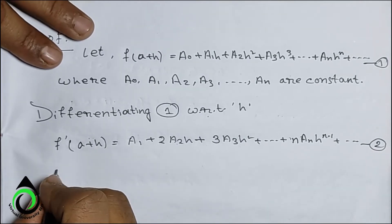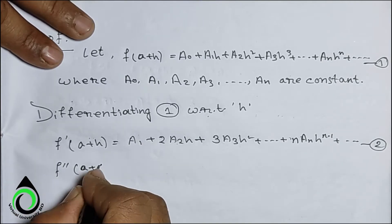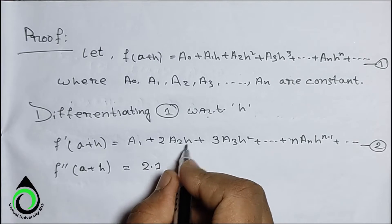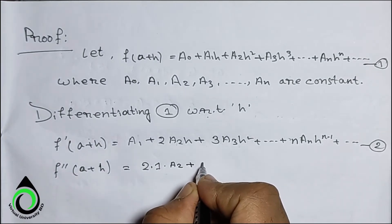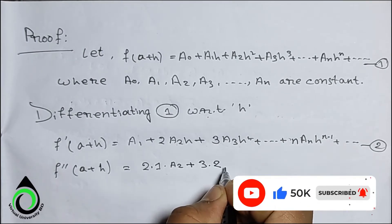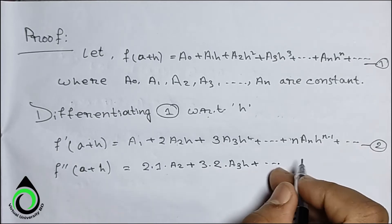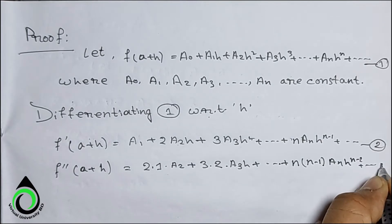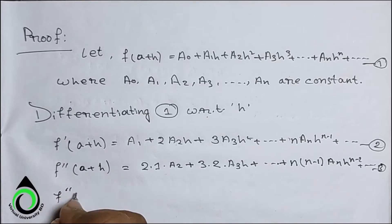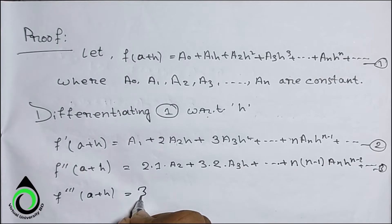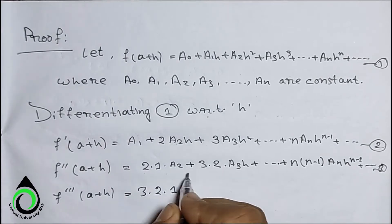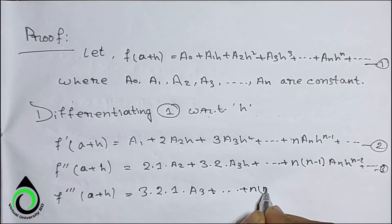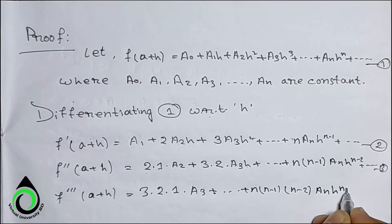So we have to differentiate equation (2) again. f''(a+h) = 2a₂ + 2·3a₃h + ... + n(n−1)aₙhⁿ⁻² + ... — equation (3). Differentiating again: f'''(a+h) = 3·2·1·a₃ + ... + n(n−1)(n−2)aₙhⁿ⁻³ + ... — equation (4).